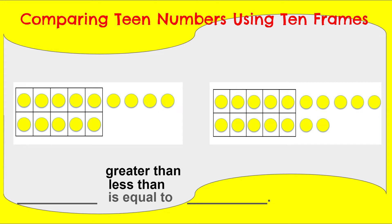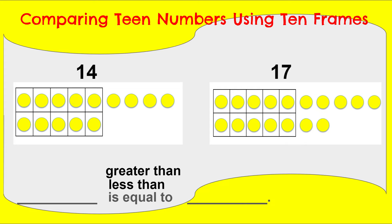And our next practice. First, we have to start by counting our two groups separately. So over here I have 10, counting on: 11, 12, 13, 14. And over here again, I have 10 and then counting on: 11, 12, 13, 14, 15, 16, 17. So I have one group of 14 and one group of 17. Now I have to think — is 14 greater than 17? Is 14 less than 17? Or is 14 equal to 17? What do you think?